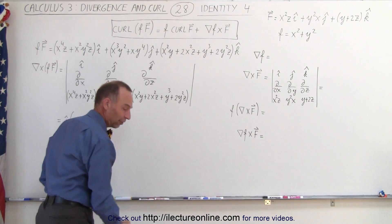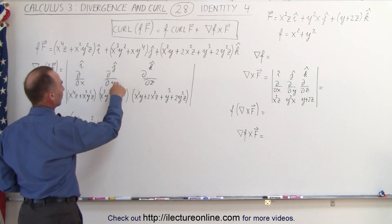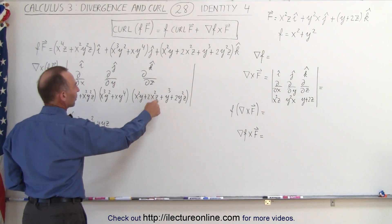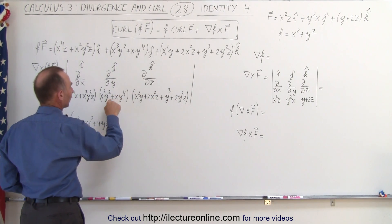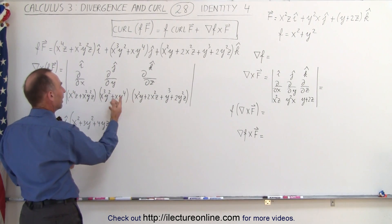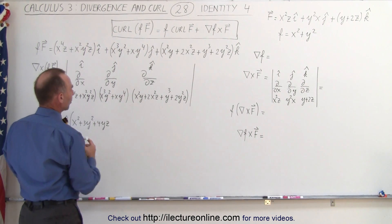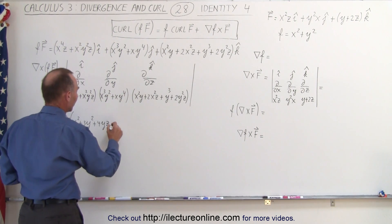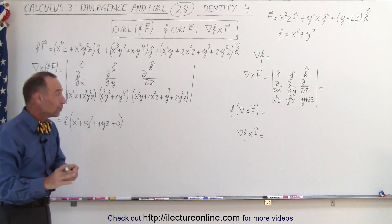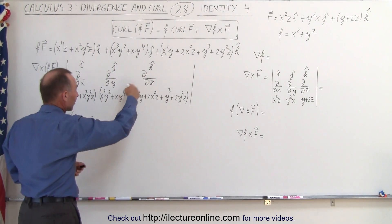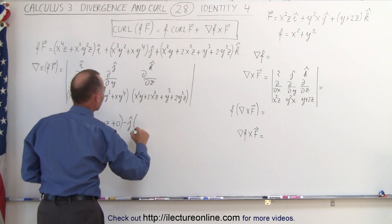We took the partial with respect to Y of this, but we also have to subtract the partial with respect to Z of this quantity. Since there are no Z components here, that term is zero. So I neglected that, but I should have shown that you also have to include it — minus the J component.